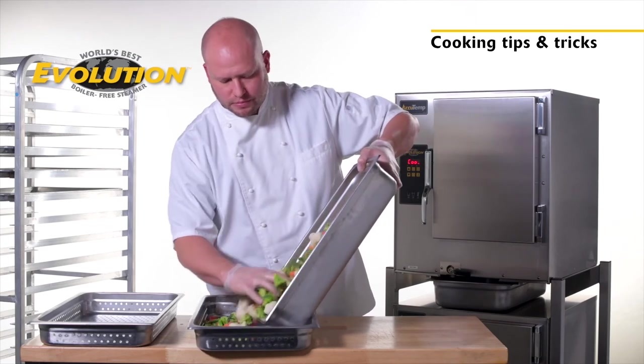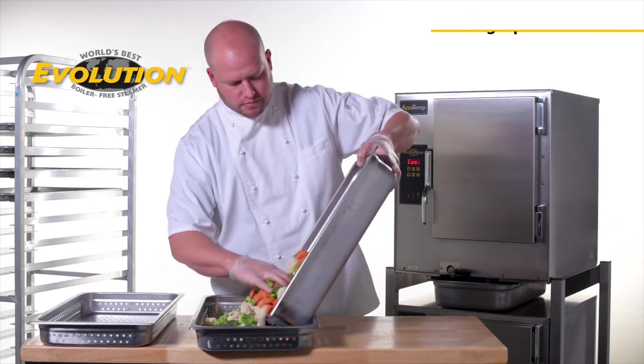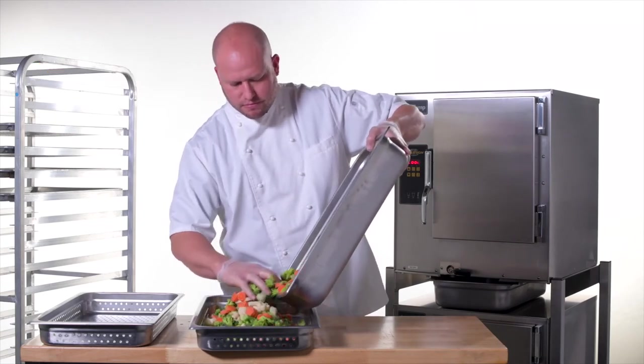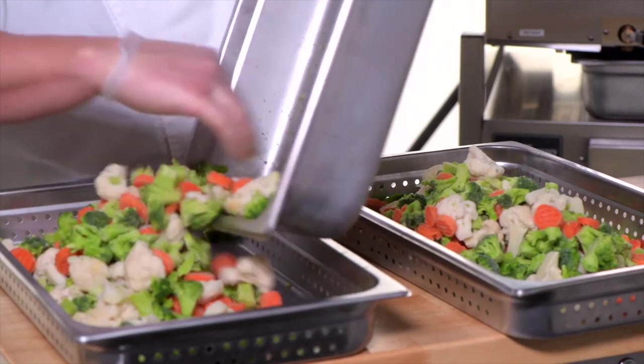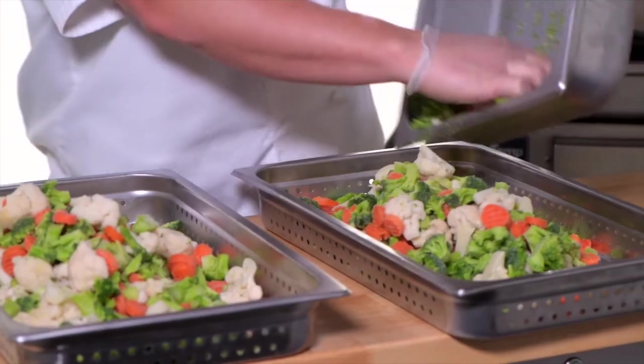When cooking large batches of food, your cook times will be shortened by breaking up food into more shallow pans. Instead of using a four-inch deep pan, use two two-inch deep pans to speed up the cooking process.